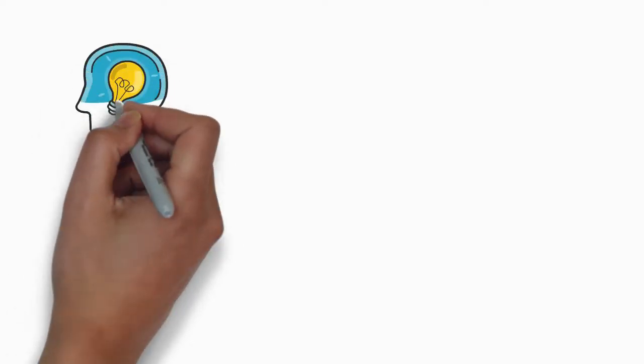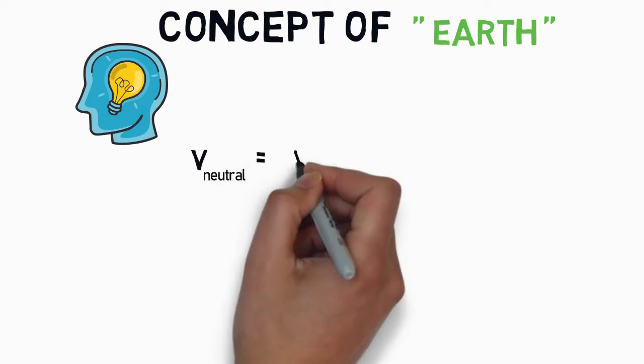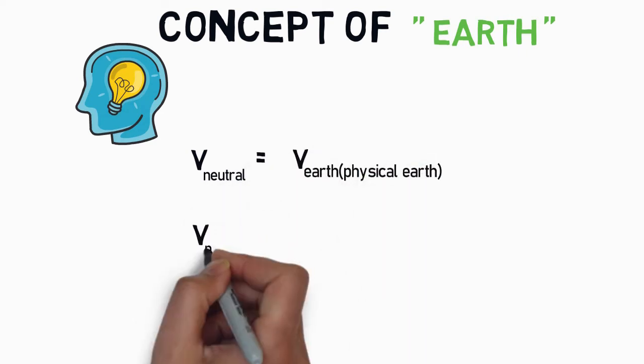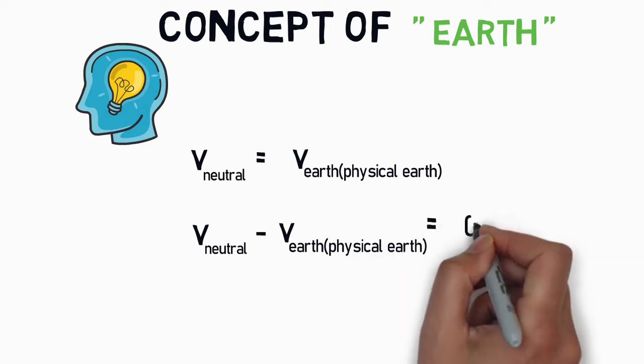In case of AC connection used for domestic purposes the neutral connection is always maintained at a potential equal to that of the physical earth. By doing so we make the potential difference between neutral wire and earth to be zero volt.